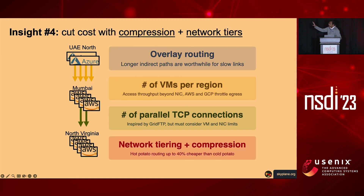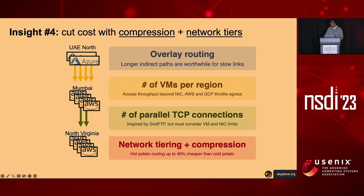To cut the cost of data transfer, we introduce dynamic optimizations for network tiering and compression. Some clouds like GCP and Azure offer up to 40% egress fee discounts if you leverage hot potato routing, but this comes at the cost of degraded network performance. Skyplane is able to utilize hot potato routing and overlay networking to recover the performance degradation and achieve substantial cost savings—with no effort from the user.